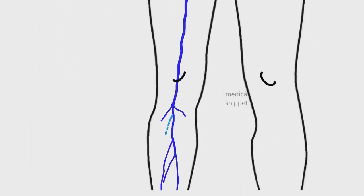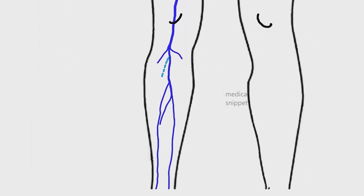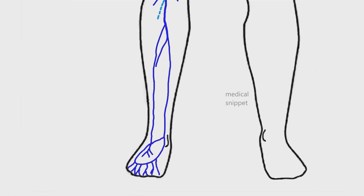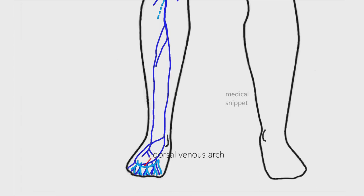Superficial veins run along the subcutaneous tissue, superficial to the fascia. These include the greater saphenous vein and small saphenous vein and their tributaries. On the dorsum of the foot, the digital veins form dorsal metatarsal veins, which drain into the dorsal venous arch. The medial end of the dorsal arch continues as the greater saphenous vein, and the lateral end continues as the small saphenous vein.